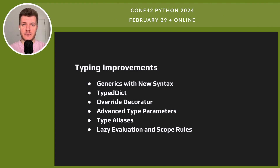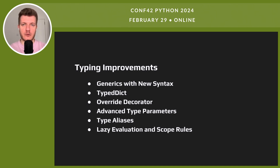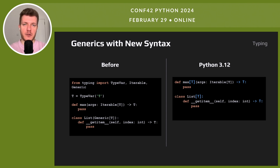Python 3.12 brings exciting typing improvements. First we have generics with a new cleaner syntax — it makes writing generic classes and functions simpler. Next, TypedDict allows for precise typing annotations of dictionary keys and values. The override decorator ensures method overrides those in a superclass accurately. Advanced type parameters cater to more complex typing scenarios. Type aliases are now easier to declare and use, making code more readable and maintainable. And lastly, we will talk about lazy evaluation and scope rules — new syntax changes how we declare generics, and it's now more straightforward.